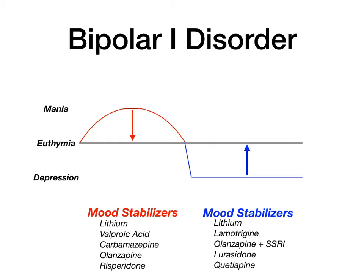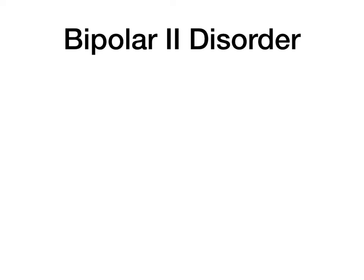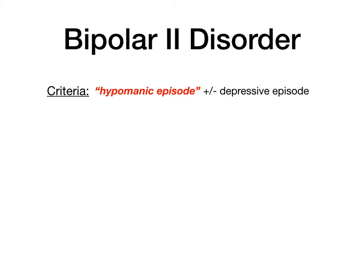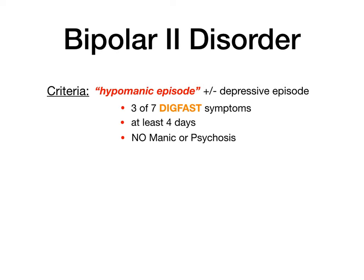Now let's talk about bipolar 2 disorder. Bipolar 2 is a lot like bipolar 1, but the major difference is that instead of a manic episode, these patients get hypomanic episodes — usually with a much more prominent major depressive episode. Instead of mania, it's hypomania. Hypo means less, so it's a manic episode that's a little less than a true manic episode.